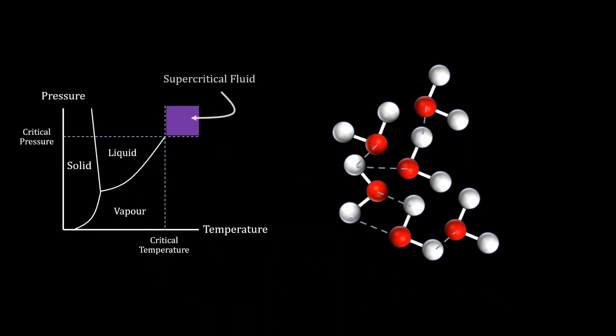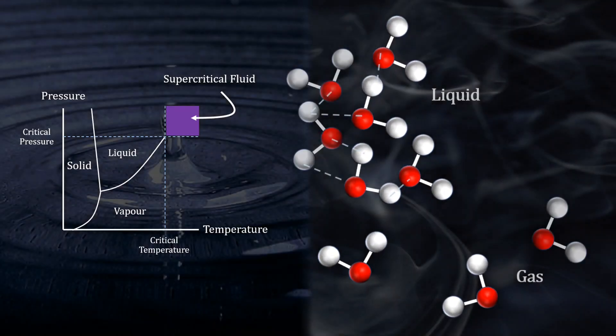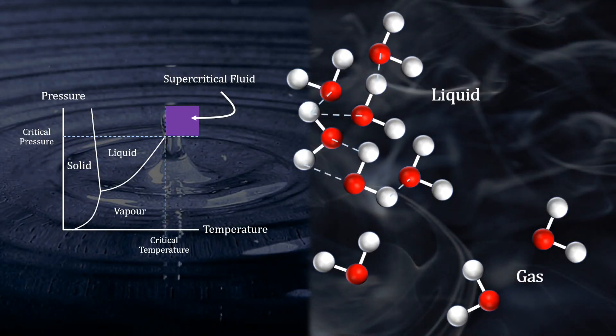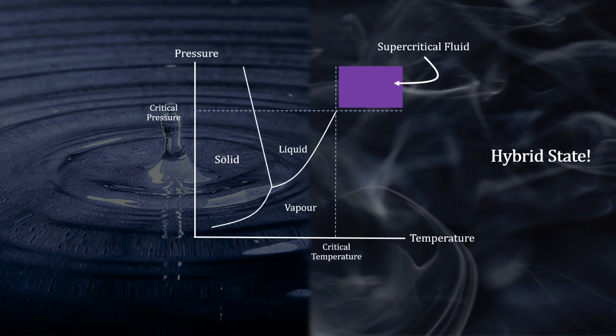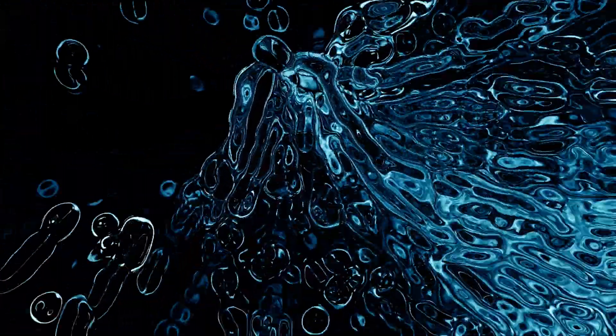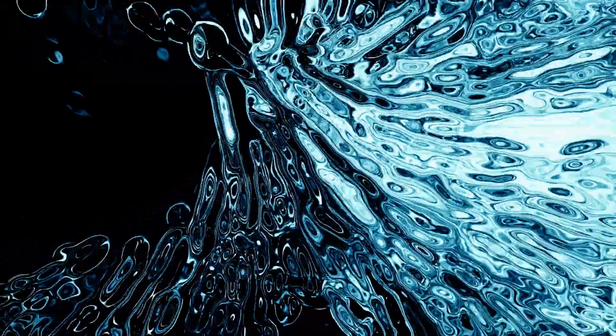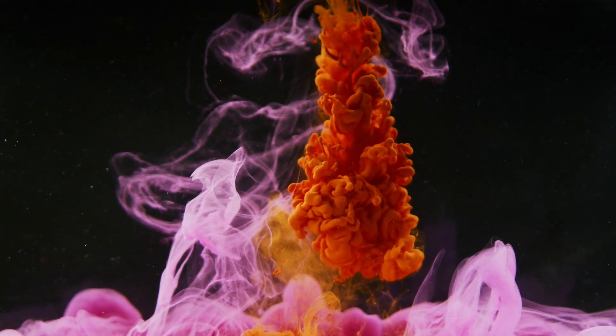The result is a supercritical fluid, a unique fourth state of matter where the properties of both a liquid and a gas become indistinguishable. In a supercritical fluid, you'll find behaviors like a gas flowing like a liquid and a liquid diffusing like a gas.